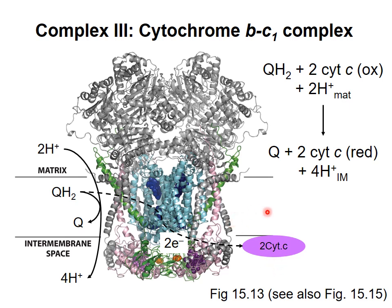As this happens, two protons are removed from the matrix, and four protons are released into the intermembrane space. The net reaction is shown here. QH2 is oxidized, and two cytochrome Cs are reduced.